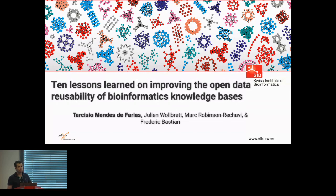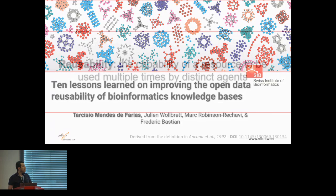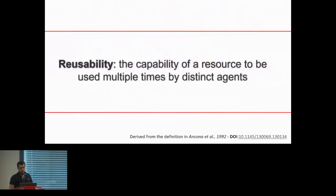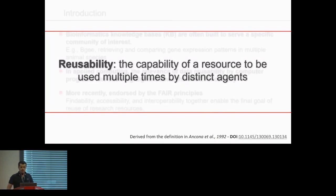I'm co-leading the Knowledge Representation Unit at SIB Bioinformatics. I would like to start my talk by defining an important keyword: reusability. Under the scope of this work, by reusability we mean the capability of a resource to be used multiple times by distinct agents. A resource here can be interpreted as data, a workflow, or a software tool, and distinct agents could be an organization, a software agent, or a person.